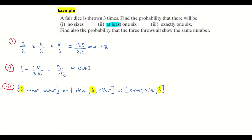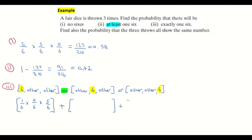Now I turn that into probability. The probability of getting a six on a dice is 1/6. On the second dice I get something else — that's 5/6. On the third dice I get something other than a six — also 5/6. So it's 1/6 × 5/6 × 5/6. Remember 'and' means multiply, so I put multiplication symbols between those three fractions. We also have the 'or' symbol — remember that 'or' in probability means to add — so it's this scenario plus the next scenario plus the next scenario.